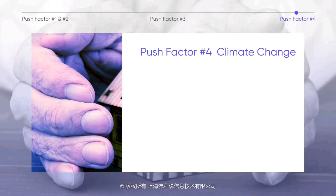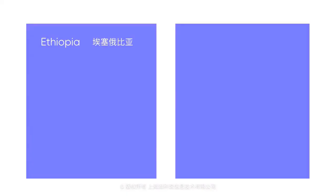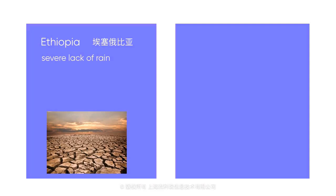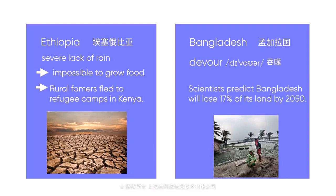In the 21st century, climate change has become an increasingly important factor in human migration. Environmental threats like lack of rainfall, wildfires, or rising sea levels may force people to seek refuge in other countries. Parts of Ethiopia have faced a severe lack of rainfall for years, making it impossible for many rural farmers to grow food. Thousands have fled to refugee camps in Kenya that were originally meant to hold 90,000 people but are now home to 180,000. In Bangladesh, half the population lives less than 16 feet above sea level. If global temperatures continue to rise, scientists predict Bangladesh will lose 17% of its land by 2050, potentially leading to 20 million climate refugees.